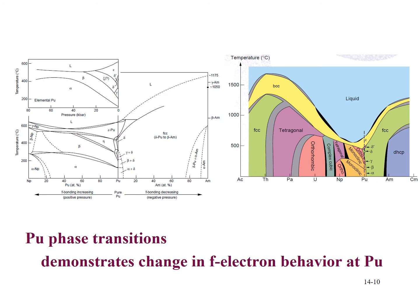Another way of viewing F-element behavior in the actinides: as we go from neptunium to plutonium, the phases become more complex. Beyond plutonium toward americium, F-bonding decreases and phases become much simpler. This is also seen in plots showing simple phases that increase in complexity up to plutonium, where F-orbital interactions are maximized, and then become much simpler beyond plutonium toward americium.